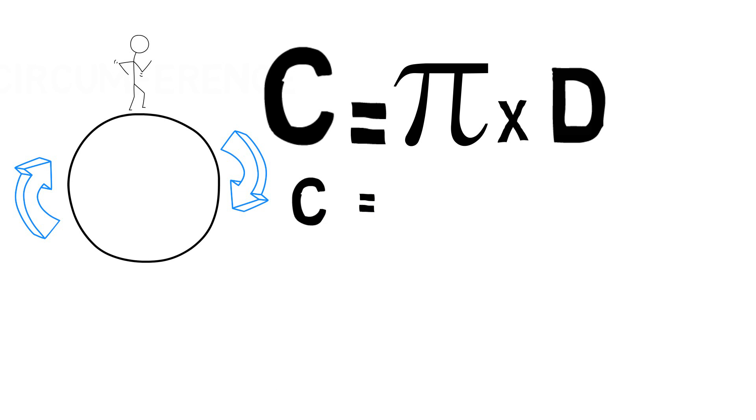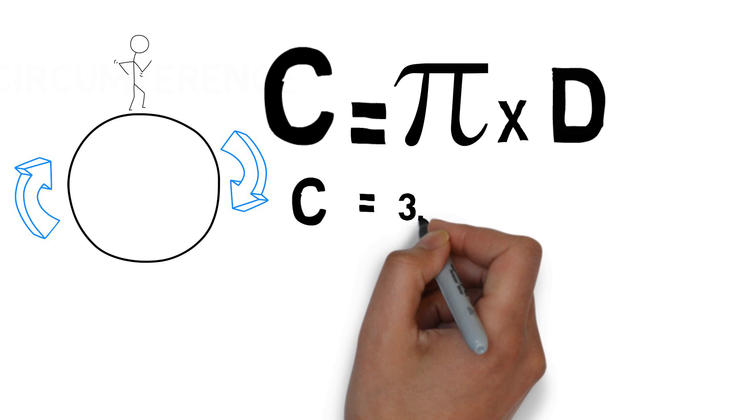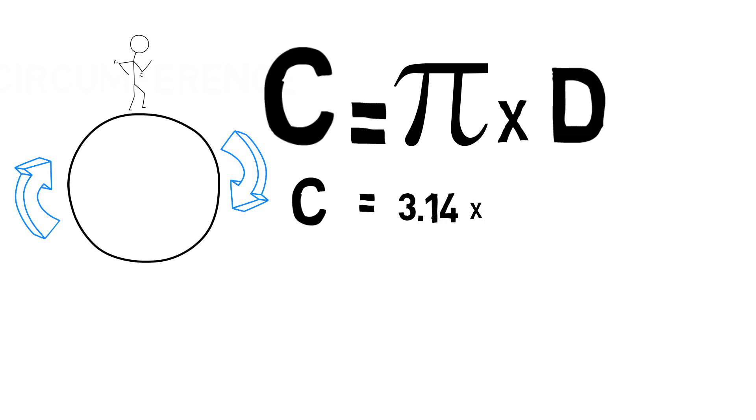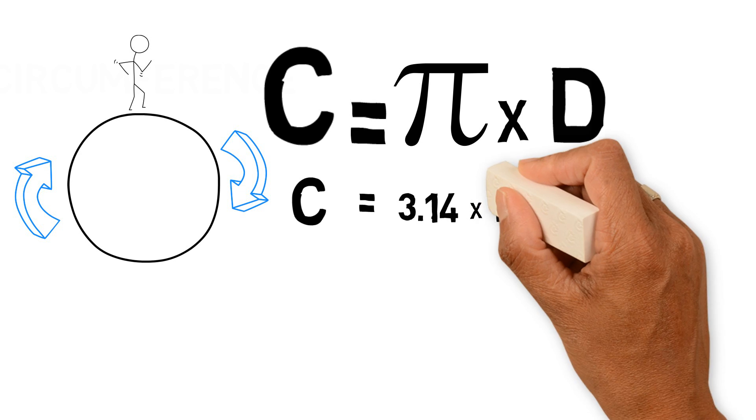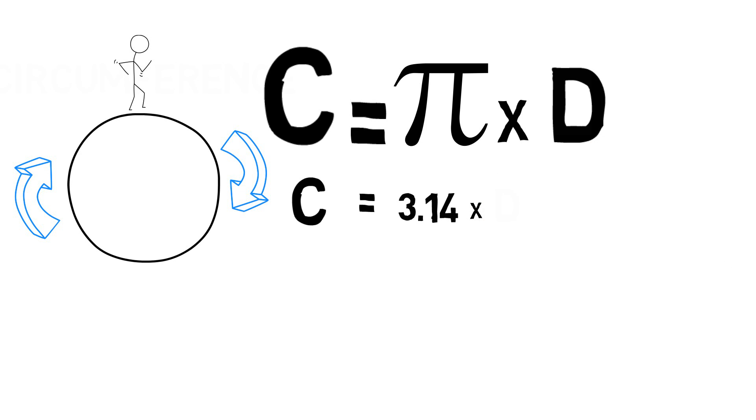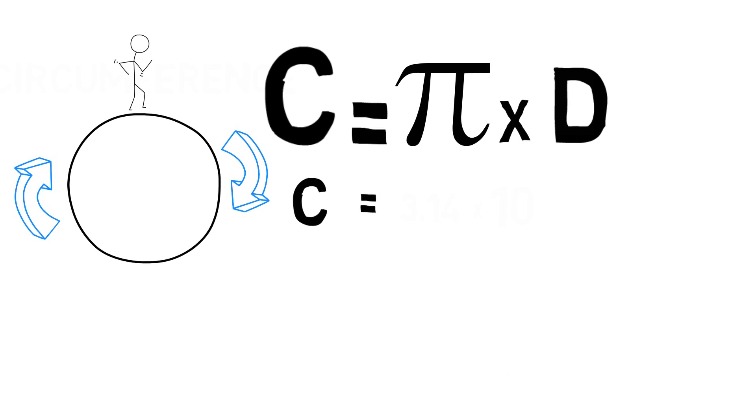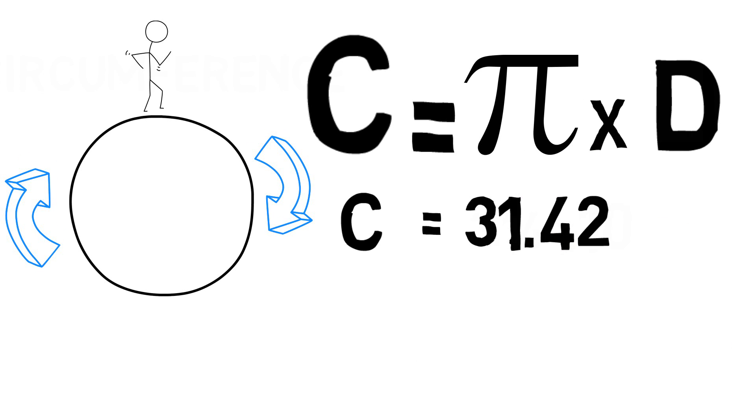Let's replace the pi symbol with its actual value. So we get C is equal to 3.14 times D. And let's replace D with its value which is 10. So we get C is equal to 3.14 times 10 which gives us 31.42 centimeters.